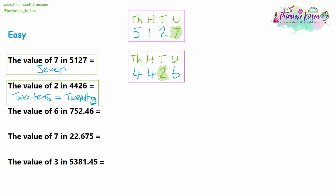Moving on to question three. We have a number that looks longer: 752.46. We're going to write down the place values. Let's start with the units — the first number before the decimal place. Then we've got tens and hundreds. You can say it out loud: you start off saying 700, so the seven will be in the hundreds column. After the decimal place, we have the tenths column — numbers 10 times smaller than one — and the hundredths column, numbers 100 times smaller than one. We've been asked to find the value of the six. The six is in the hundredths column, so we write down six hundredths.